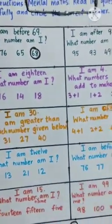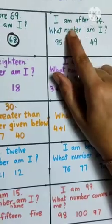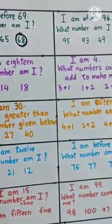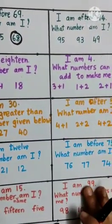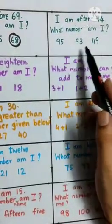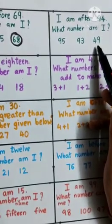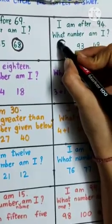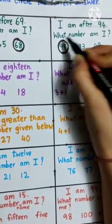Then look over here. I am after 94. What number am I? The answer is 95. So, circle number 95.